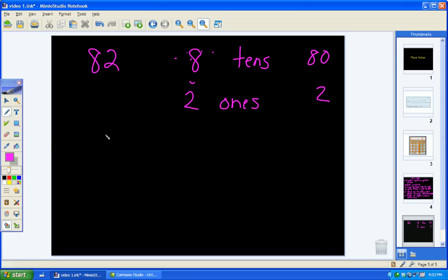What happens if I flip-flop those numbers? I'm still using the exact same digits, but now I'm doing 28. Is it still 8 tens and 2 ones? No. So, now it's 2 tens and 8 ones. So, it takes on a whole different value based on its position, which is what place value is. It's all about the position of a number and its value. So, now that's actually 20 and 8.